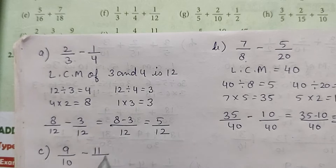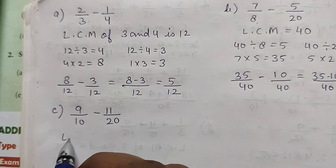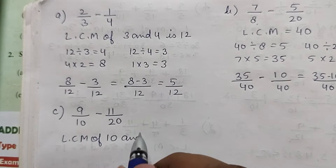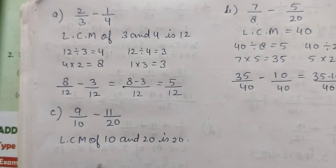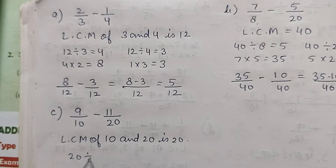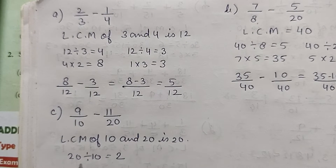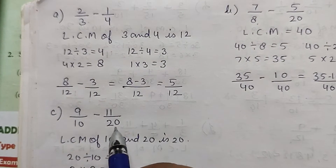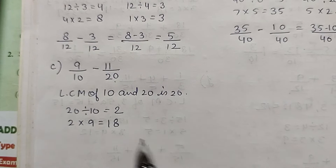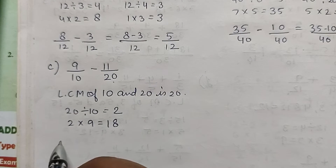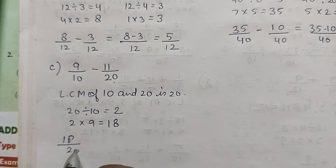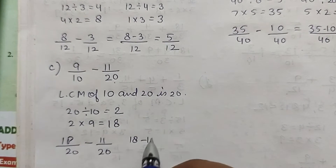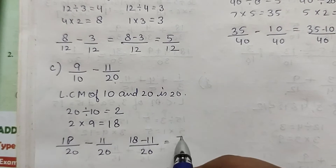Part c: 9/10 minus 11/20. The LCM of 10 and 20 is 20. 20 divided by 10 is 2, and 2 multiplied by 9 is 18. The second fraction is already over 20. So the new fractions are 18/20 minus 11/20, which equals 7/20.